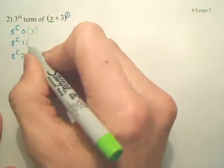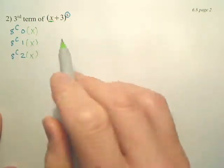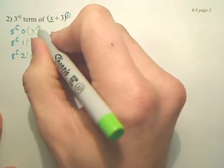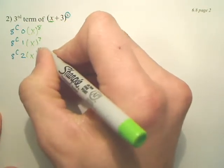So you can do x to some power. Now what power would you put x to? Well, you look back at that, 8. So you start with 8 here, then you do 7, then you do 6.